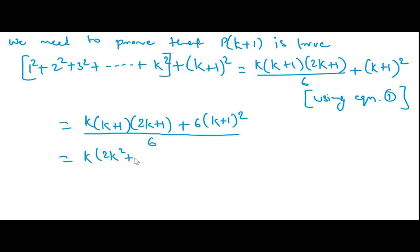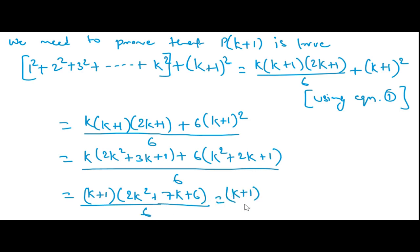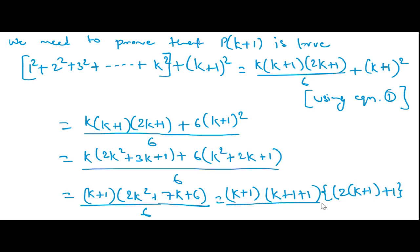Simplifying further: (k+1)(2k² + 7k + 6)/6. This can be factored as (k+1)(k+2)(2k+3)/6, which can be written as (k+1)·[(k+1)+1]·[2(k+1)+1]/6. So this is in the form n(n+1)(2n+1)/6 with n = k+1.